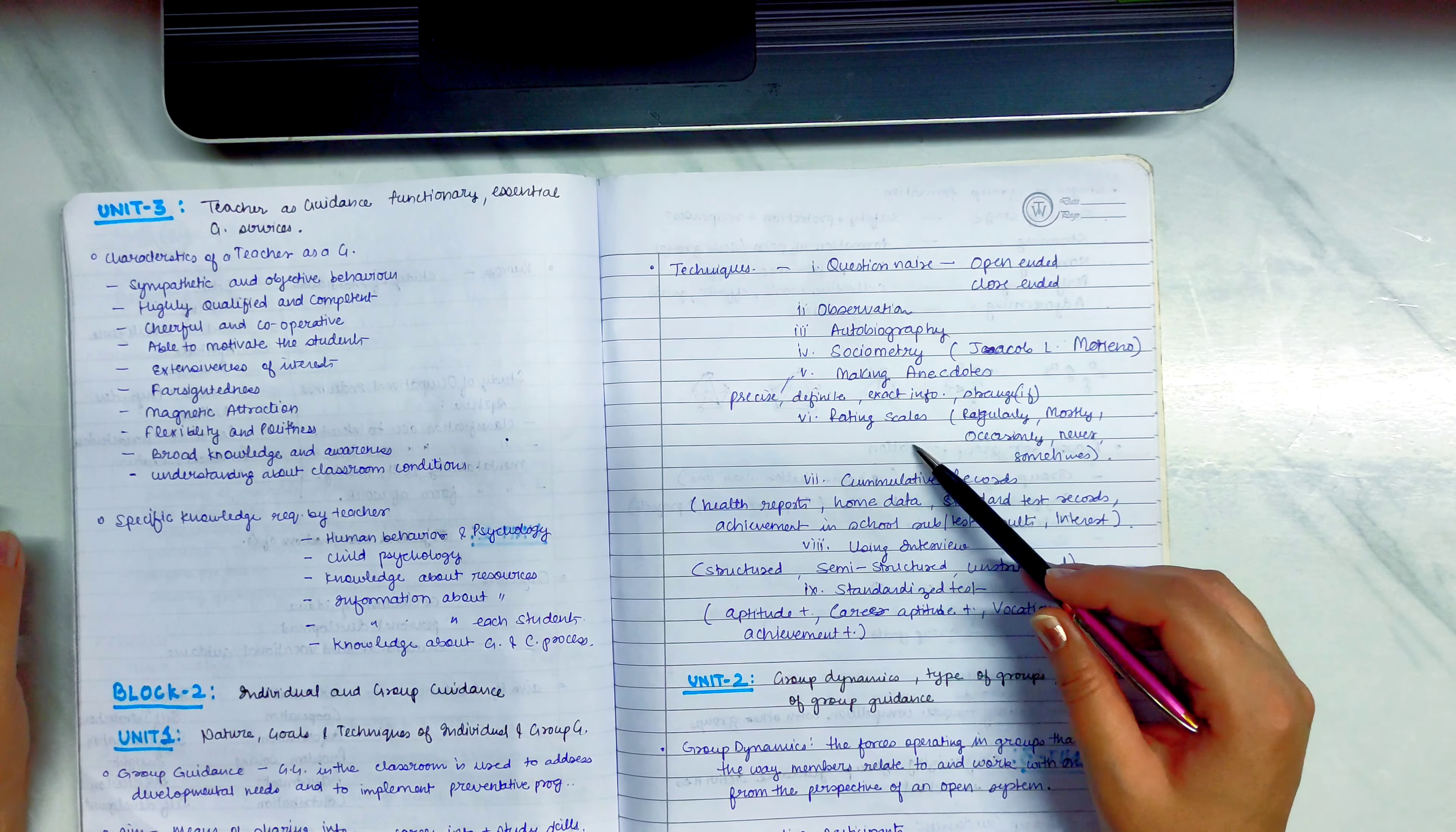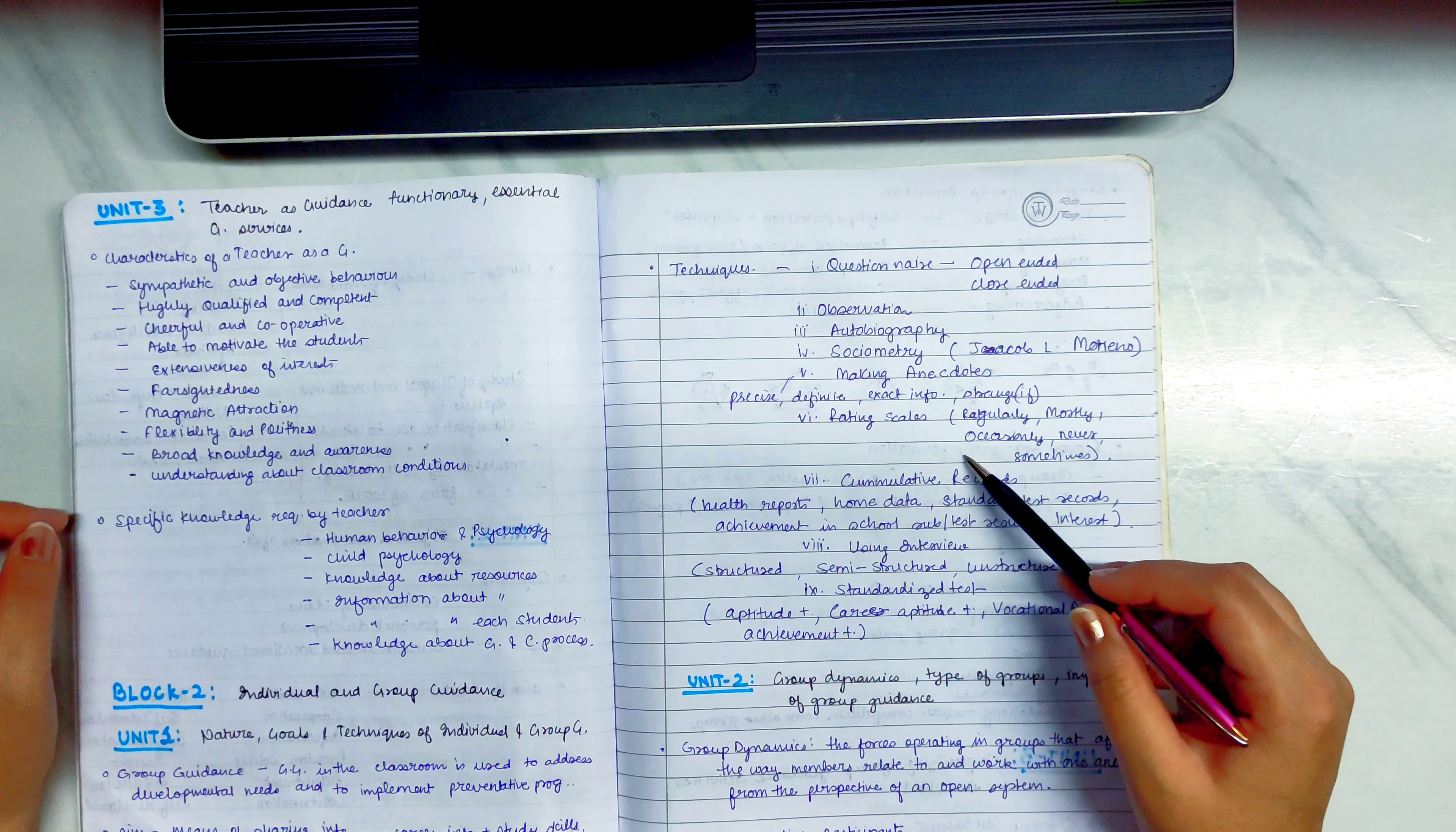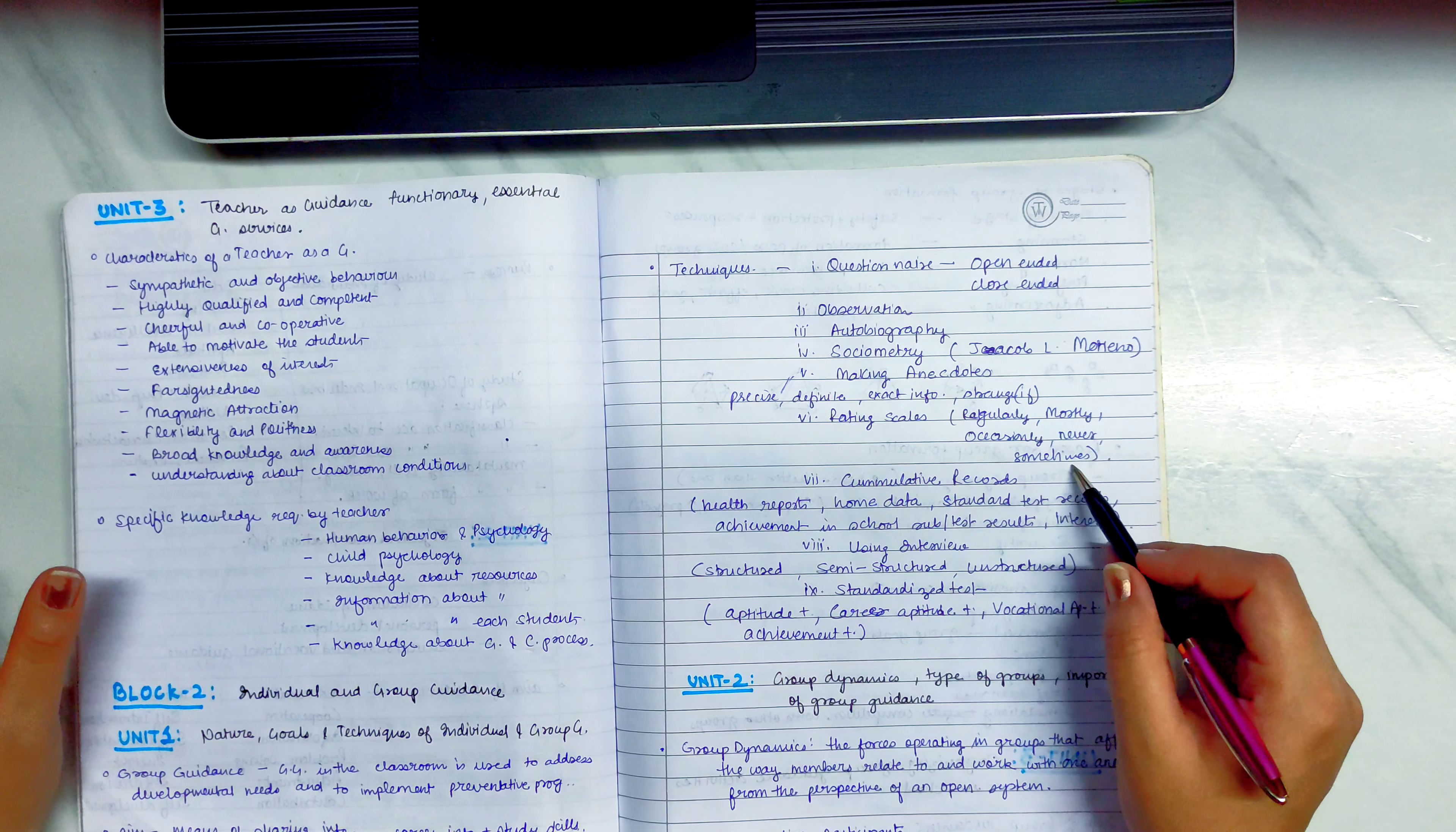Rating Scale. In Rating Scale, you can divide 4 or 5. Regularly, mostly, occasionally, never or sometimes. You can mark a child's behavior. Or yes or no, or most often, or often. You can give all these options.